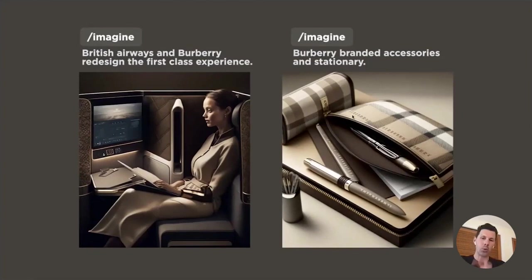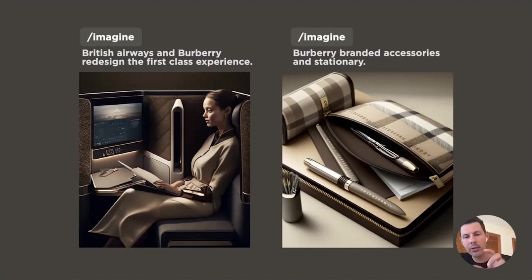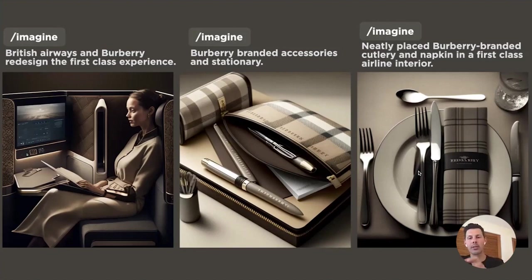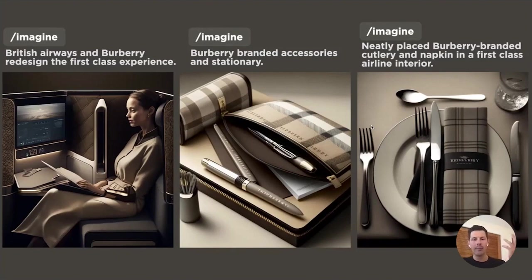'Burberry branded accessories and stationery' — from a distance it looks cool, but looking closely I don't know what these objects are — Q-tips, paint brushes, maybe a makeup kit? The stationery is there but some items are unidentifiable. I decided it was good enough to keep in the mix. I made a list of many different objects I wanted to see and created them separately rather than trying to insert them all into one image with a model eating dinner.